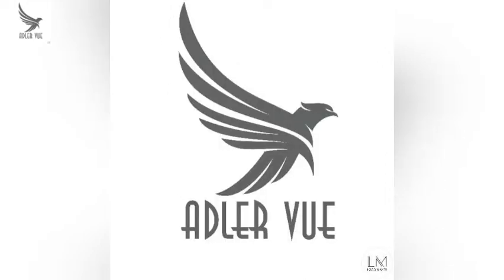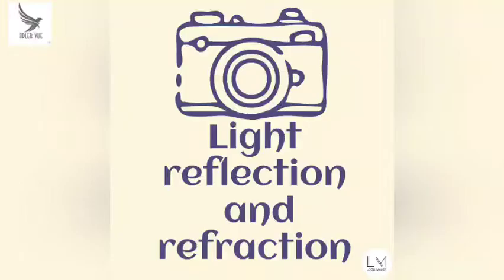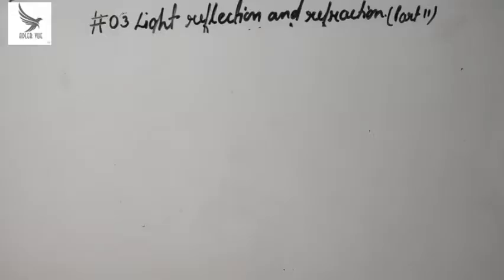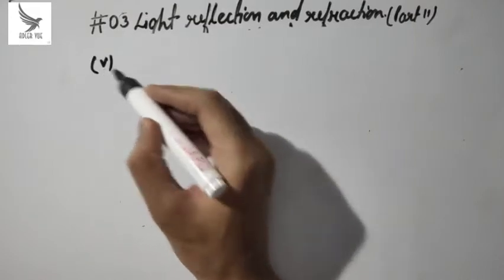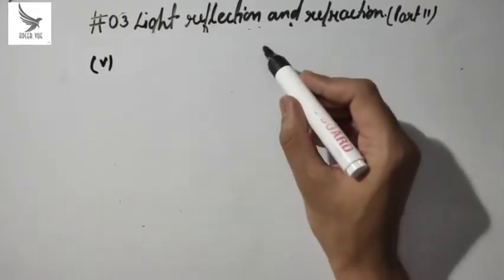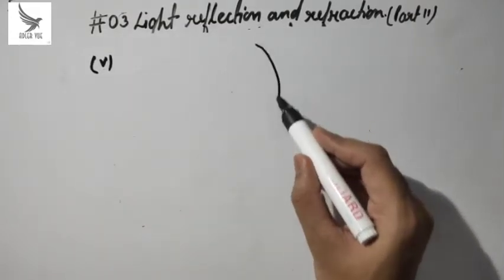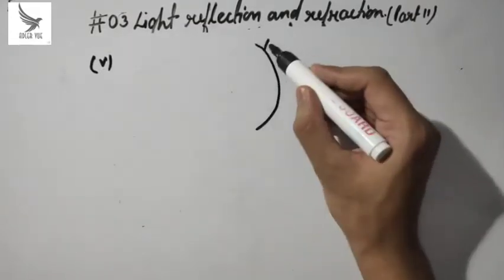Hello everyone, this is Part 2 of the third lecture of Light Reflection and Refraction. In this lecture we will discuss the remaining part of Lecture 3. Now the fifth case — we will see the fifth position again — this is a concave mirror.